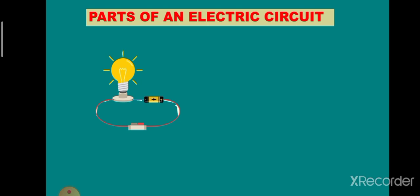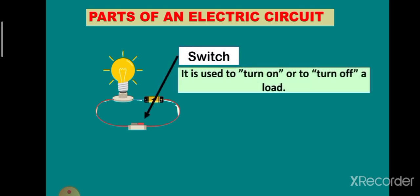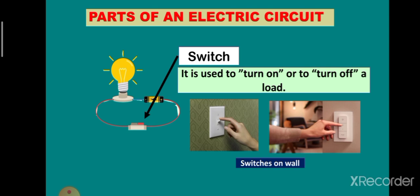The last part is the switch. It makes it easy to control the flow of electricity. It opens and closes a circuit by simply turning it off or on. In our example, we have the switches on the wall.